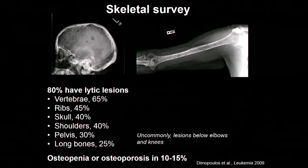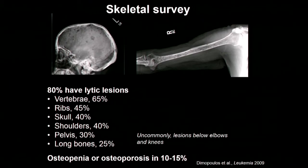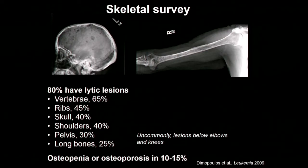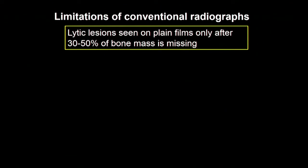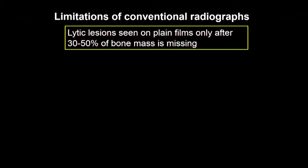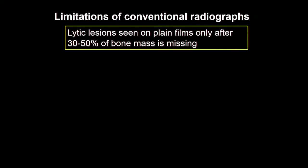Generally speaking, these bone lesions are found in the axial skeleton and infrequently seen below the elbows or below the knees. However, this is an older technology — it's been around for decades — and there are limitations to how sensitive it is for detecting bone involvement, since you generally have to wait until about 30% to 50% of bone is lost before you can actually see it.